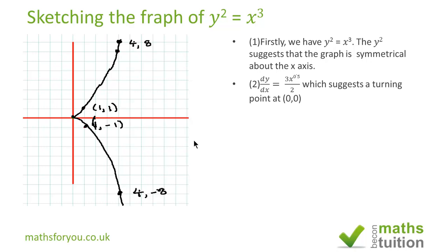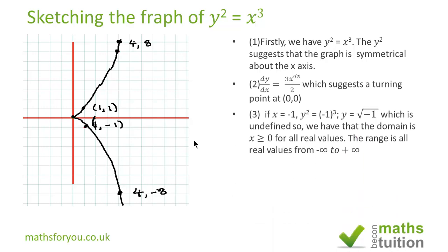And then the third thing I did was, if I assign minus 1 to x, if x is equal to minus 1, then y squared is equal to minus 1 all cubed, which then means that y is equal to the square root of minus 1. And we know that this is undefined. So our domain will be from x greater than or equal to 0 for all real values. And the range will be y will take values from minus infinity to plus infinity.